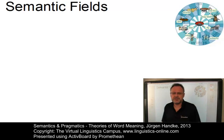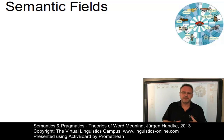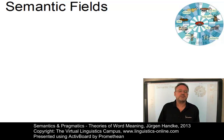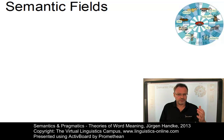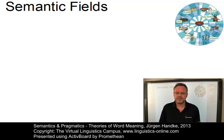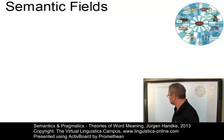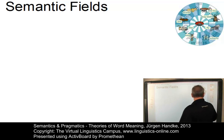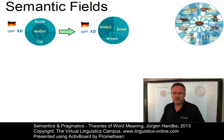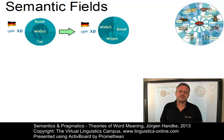In semantic fields, word meaning is defined by relating and contrasting members of a set or field. Such areas of meaning are called word fields or semantic fields. The idea of establishing semantic fields goes back to historical studies of meaning change and changes to such fields through time.